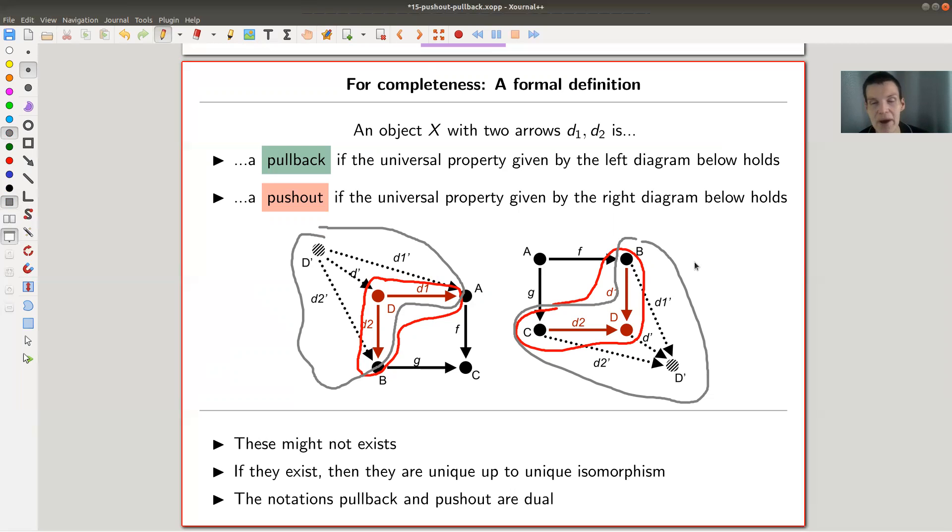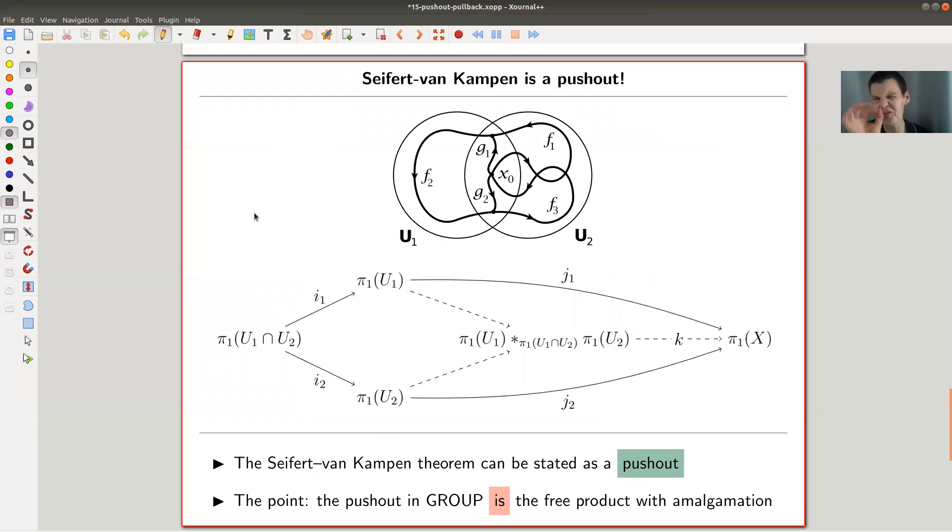And as usual, they might not exist, or when they exist they're unique up to unique isomorphism, which explains why they are so important. As soon as they exist, of course.